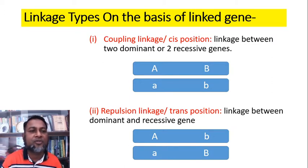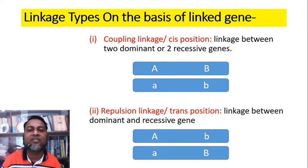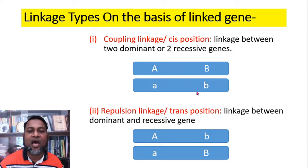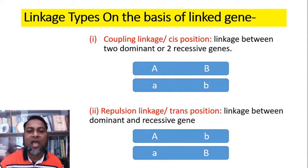Now I discuss types of linkage based on linked genes. Linkages are of two types. One is couplet linkage or cis position. In this case, linkage is found between two dominant or two recessive genes. In this figure, we see capital A and capital B — both dominant genes — are present in a chromosome. Such a position is known as cis position. On the other hand, small a and small b — both recessive genes — are present in another homologous chromosome.